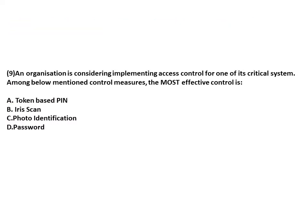An organization is considering implementing access control for one of its critical systems. The options are token-based PIN, iris scan, photo identification, and password. Biometric controls are more reliable than any other form of access control, so the answer is iris scan.